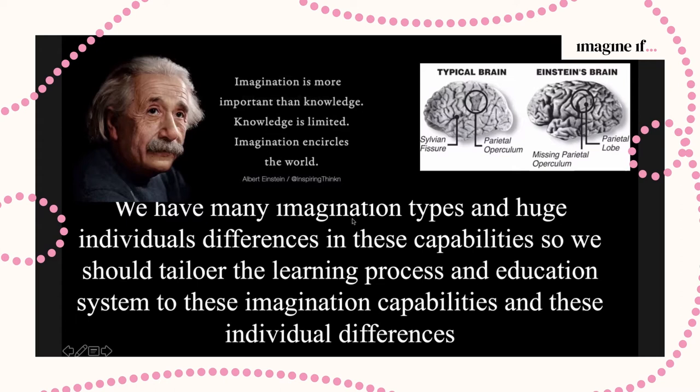To summarize: we have many types of imagination — it's not just one system, there are many systems. Second, we have huge individual variability and differences in these capabilities. We should first of all use these differences to study the brain, but also tailor the learning process and education system to different imagination capabilities, develop each one of them, and tailor learning and development based on these individual differences. Thank you very much for your attention.